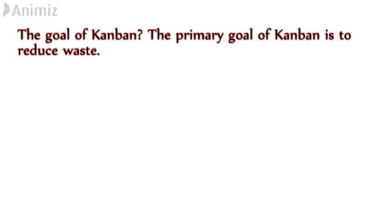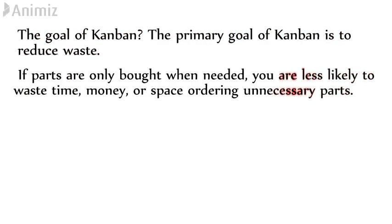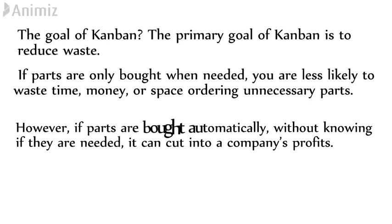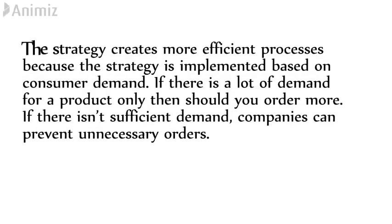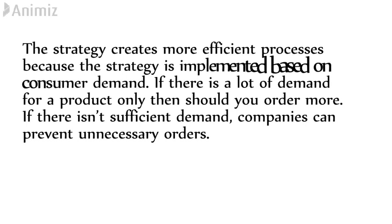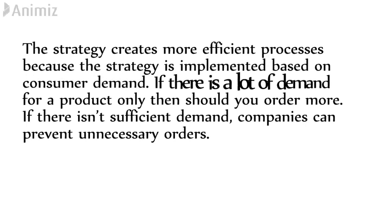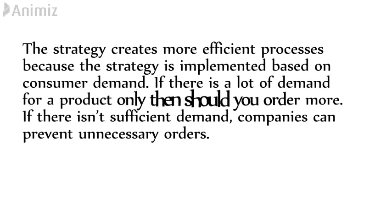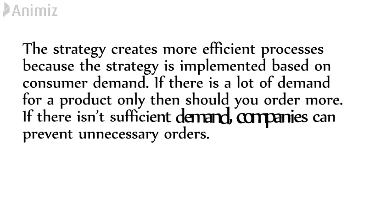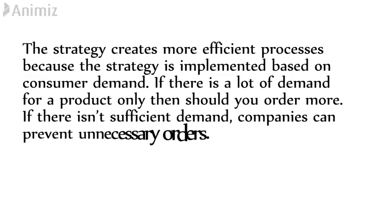The goal of Kanban? The primary goal of Kanban is to reduce waste. If parts are only bought when needed, you are less likely to waste time, money, or space ordering unnecessary parts. However, if parts are bought automatically without knowing if they are needed, it can cut into a company's profits. The strategy creates more efficient processes because it is implemented based on consumer demand. If there is a lot of demand for a product, only then should you order more. If there isn't sufficient demand, companies can prevent unnecessary orders.